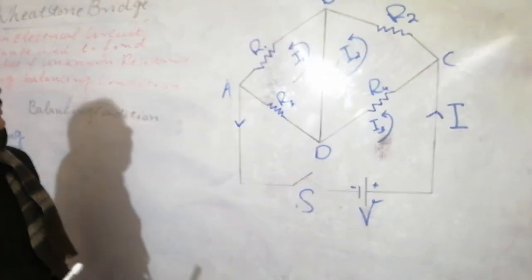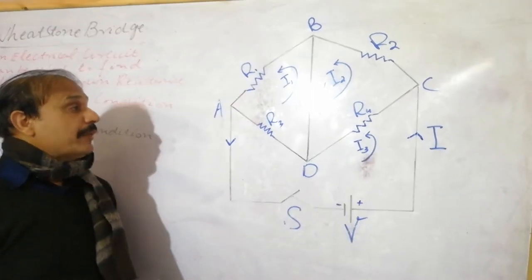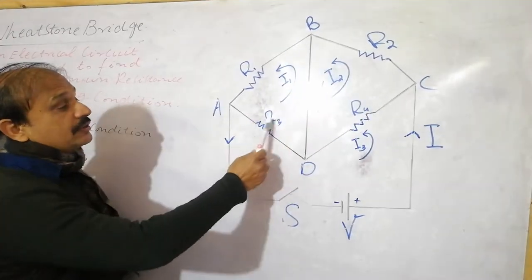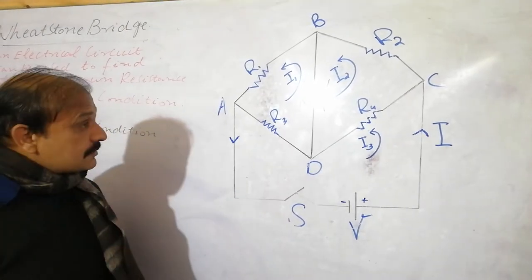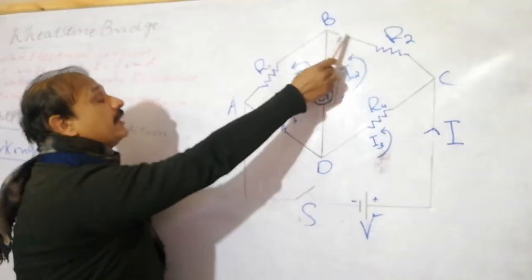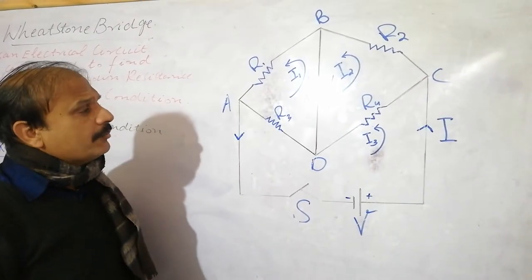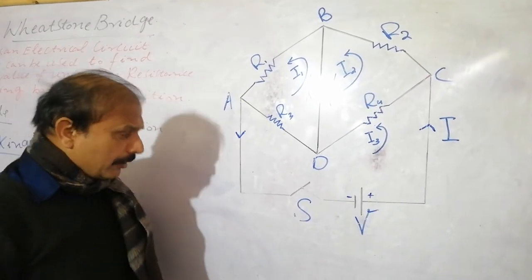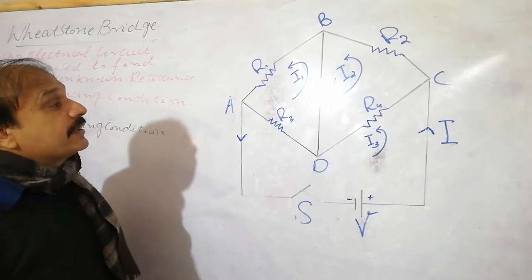This is called a bridge circuit. It is made of four resistances: R1, R2, R3, and R4. It has two nodes and is structured like a bridge, which is why it is called a bridge circuit.